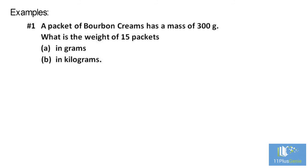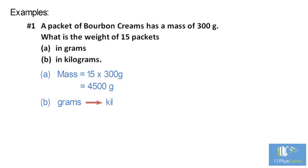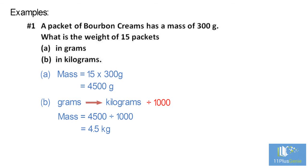Example: a packet of bourbon creams has a mass of 300 grams. What is the weight of 15 packets — a) in grams, and b) in kilograms? For part a, we need to times 300 grams by 15, which gives us 4500 grams. For part b, to change grams to kilograms we divide by 1000: 4500 divided by 1000 equals 4.5. So 15 packets of bourbon creams weigh 4.5 kilograms.